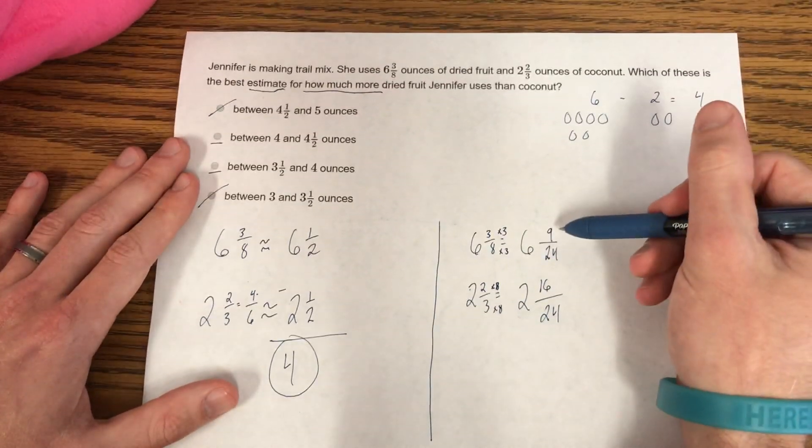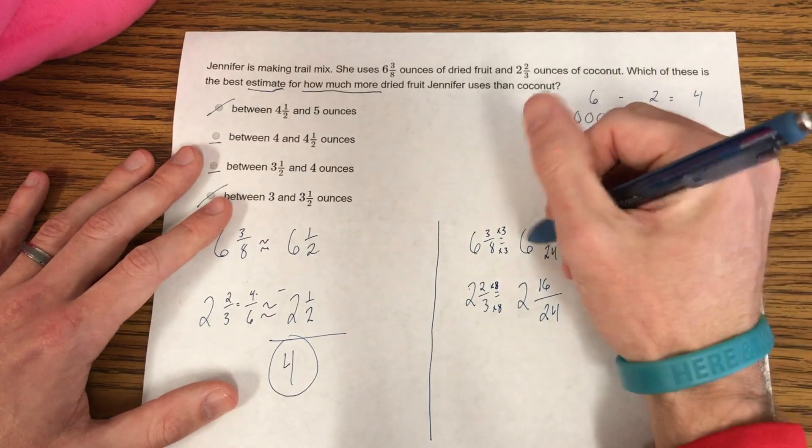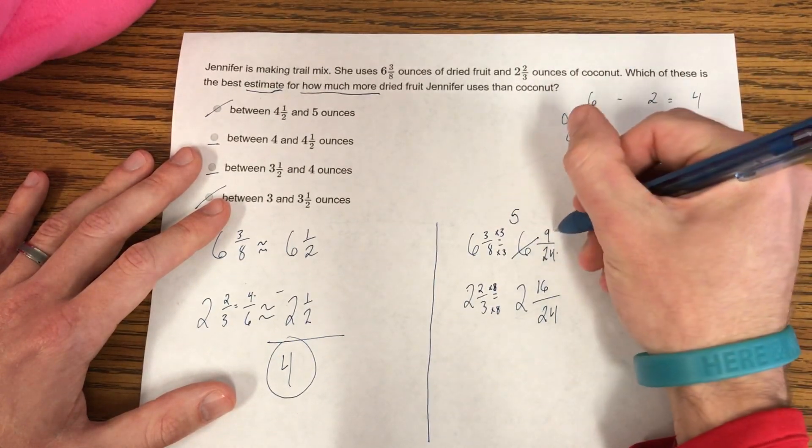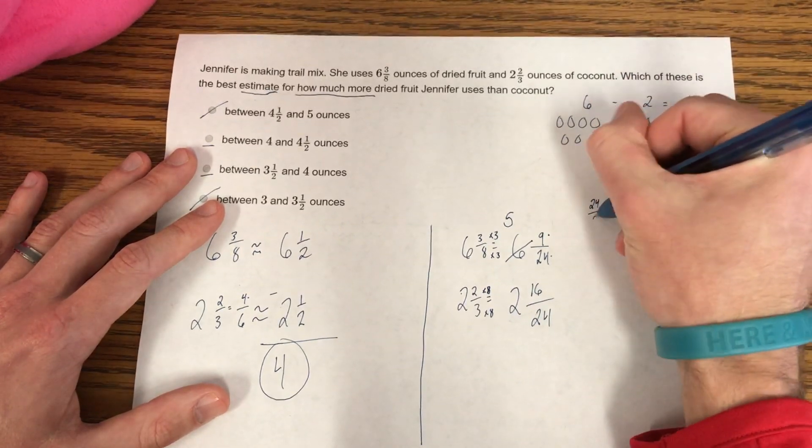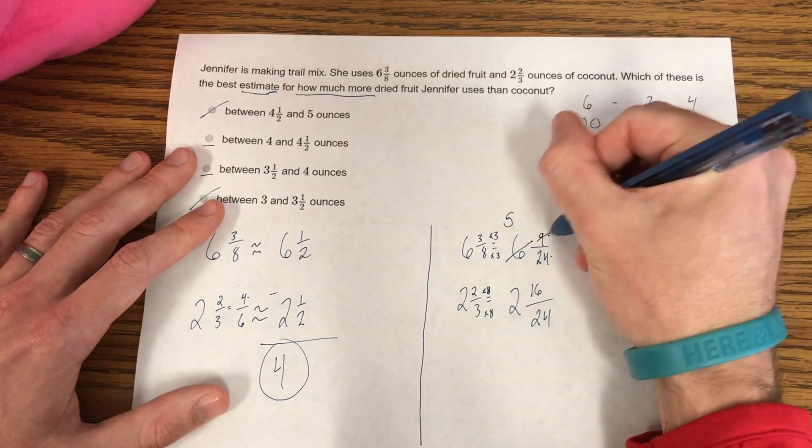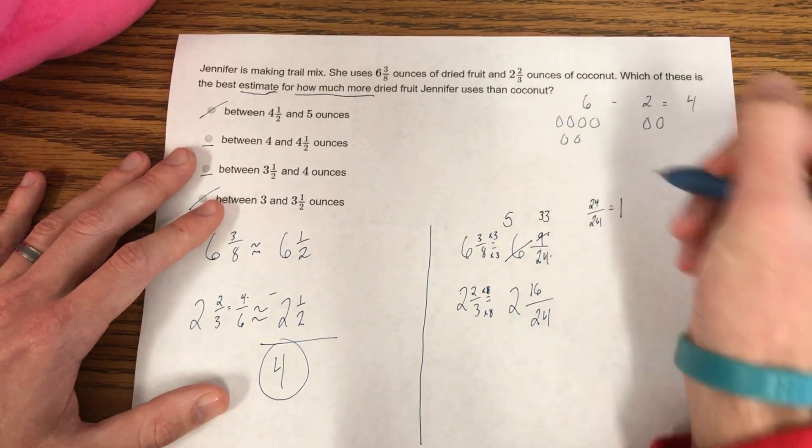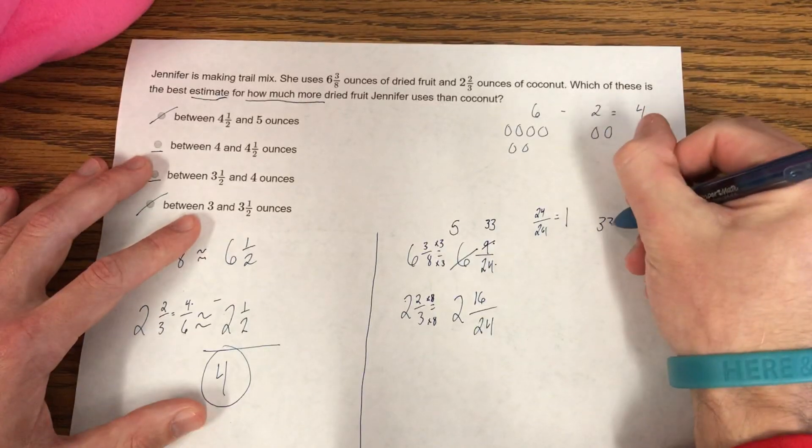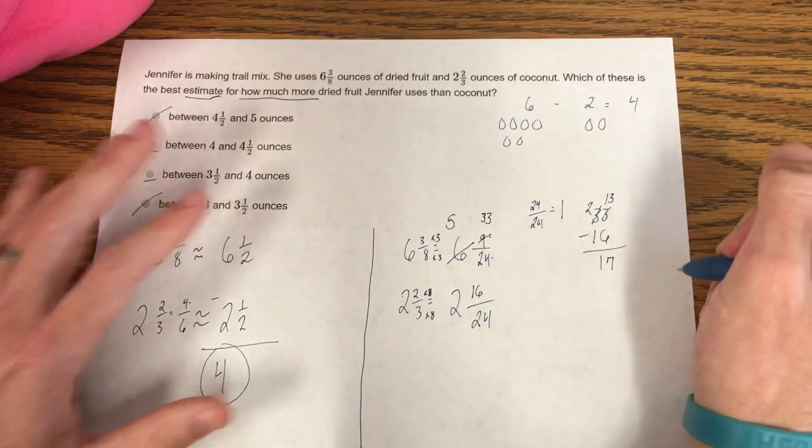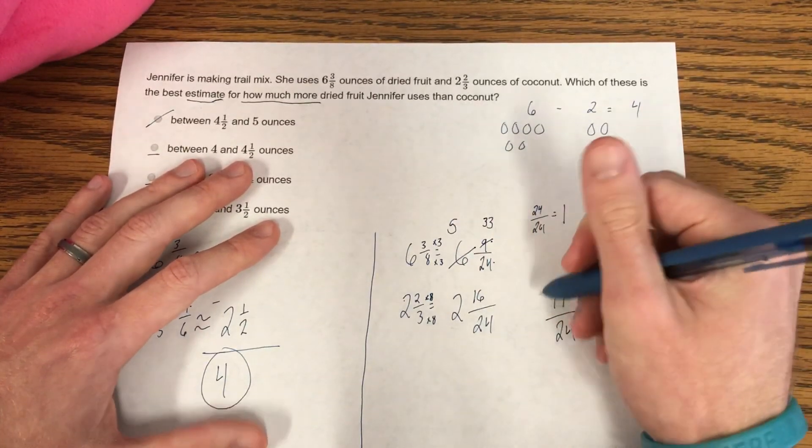So many people I saw said that, oh, 9 minus 16, that's 7. No, you can't take a bigger number away from a smaller number. We need to regroup. And remember, we do that by taking away from the whole and adding the denominator to the numerator, because 24/24 is equal to one whole. So that's why I'm adding the denominator to the numerator. So 24 plus 9, I know, would be 34 is plus 10. So this would be 33. Now I can subtract. 33 minus 16 is going to be 17. So I have 17/24, and 5 minus 2 is 3.